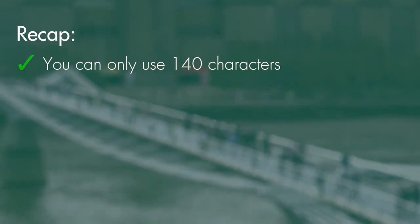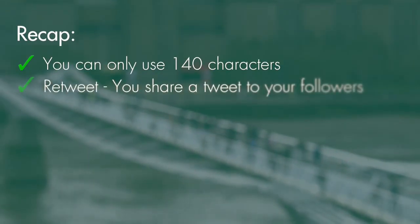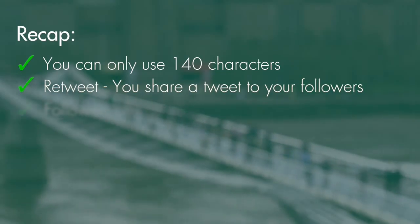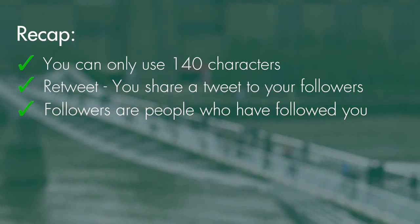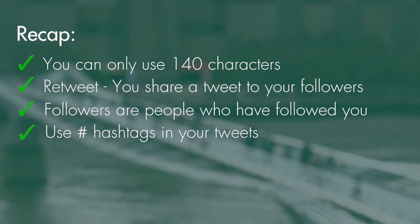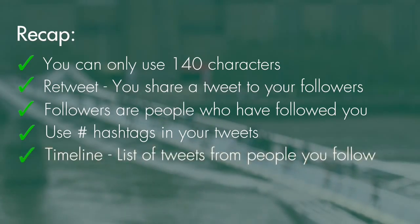A quick recap on Twitter. It first appeared in 2006 as a short, sharp, quick messaging system. How short are the messages? 140 characters in every tweet — that's all you've got to play with. A retweet is where you share somebody else's tweet to your followers. Followers are people who have followed you; in other words, they want to see your content. A hashtag adds emphasis to a tweet or helps make your tweets more visible in search results. Your timeline is a list of tweets you are seeing from the people that you follow.